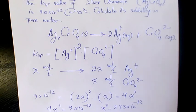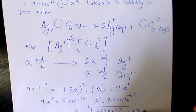That's going to be 1.3 times 10 to the power of negative 4 mole per liter. So that's the solubility of silver chromate in pure water.